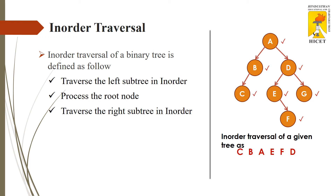So in in-order traversal, taking this tree where A is the root with left and right subtrees: I move along the left subtree of A first. After completing all processing on the left subtree, I process the root node, then move to the right subtree. This is in-order traversal.